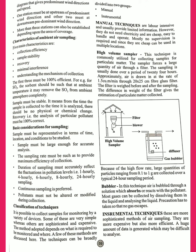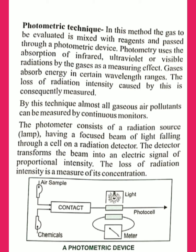The first instrumental technique is the photometric technique. 'Photo' means light. In this technique, a sample of dust in the form of gas is collected, mixed with a reagent, and passed through a photometric device. Photometry uses the absorption of infrared and ultraviolet radiations by the gases as a measuring effect. Gases absorb energy at certain wavelengths, so the fall in radiation intensity is a direct measure of dust concentration. By this technique, almost all gaseous air pollutants can be measured by continuous monitors.